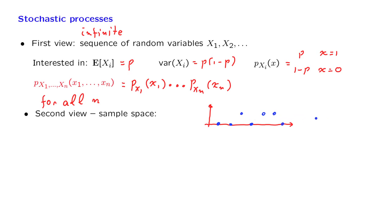So an infinite sequence of that kind is one possible outcome of this infinitely long experiment, one particular outcome of the stochastic process.